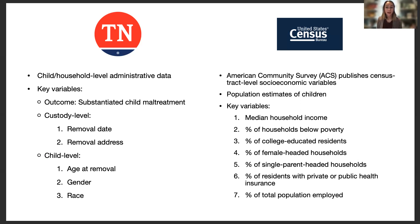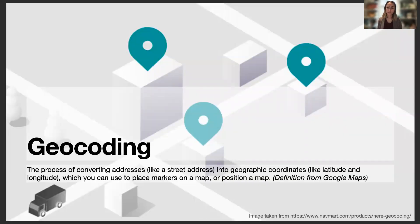You might be asking how we're going to tie these things together. The answer is a really cool process known as geocoding. Geocoding is defined by the Google Maps API as the process of converting addresses like a street address into geographic coordinates like latitude and longitude. We were able to take the child's removal address from the administrative DCS database, geocode it to a latitude and longitude, and from those coordinates figure out which census tract that child was residing in at the time.